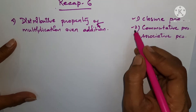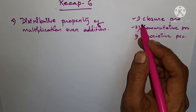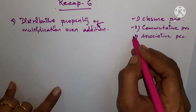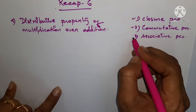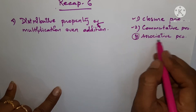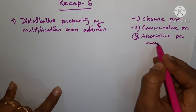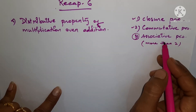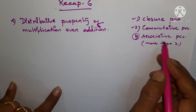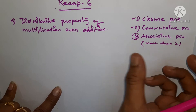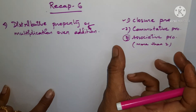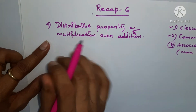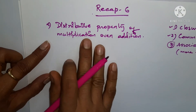First of all, you have to understand that the associative property is applicable for more than two numbers, because we need grouping — we are doing associations and making groups of numbers. Similarly, the distributive property is also applicable for more than two numbers.